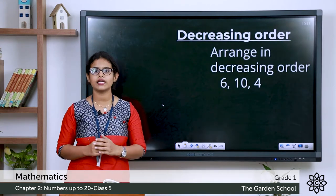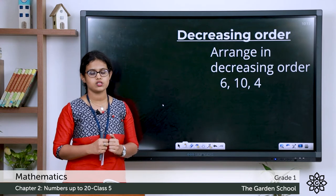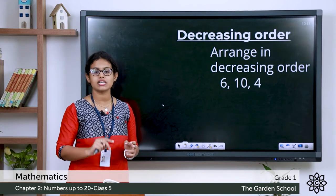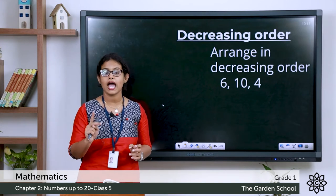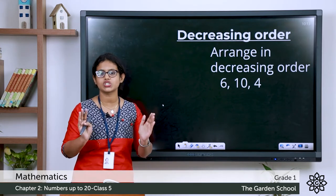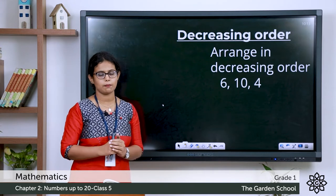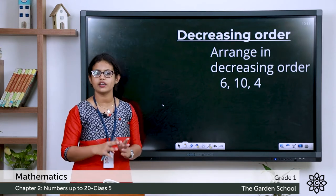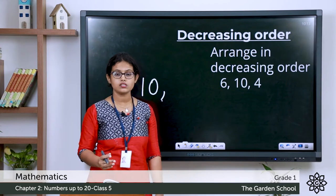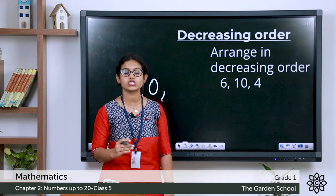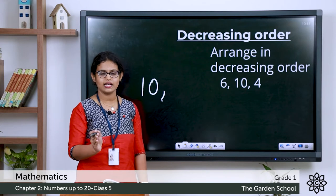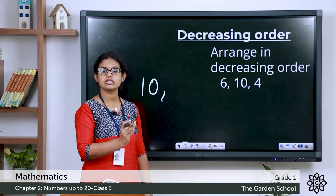Now let's arrange the numbers 6, 10, and 4 in decreasing order. Two numbers are one-digit numbers and 10 is a two-digit number. We know that two-digit numbers are always larger than one-digit numbers. So which one is the largest? Number 10 — so let's write 10 first. Now let's find 6 and 4. Which number is bigger? Let's do backward counting from 10: 10, 9, 8, 7, 6 — so 6 is here.